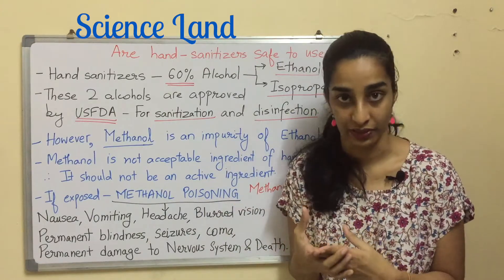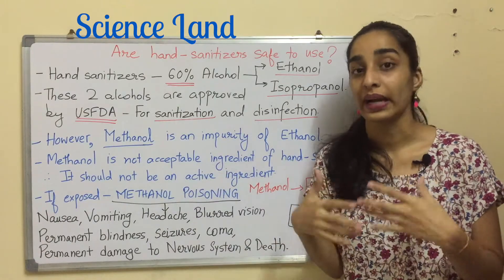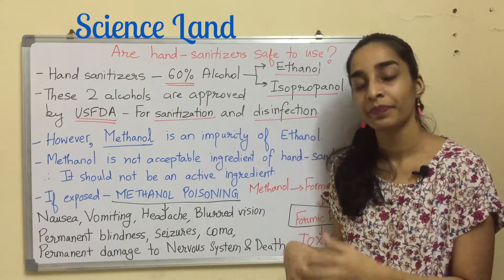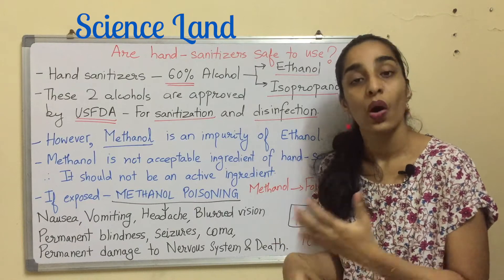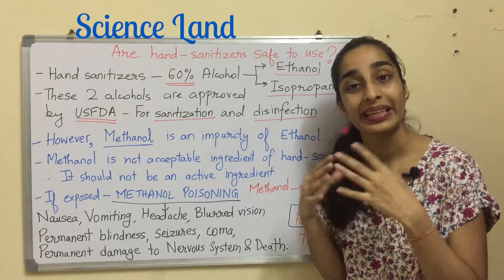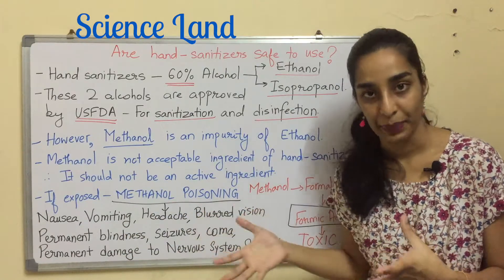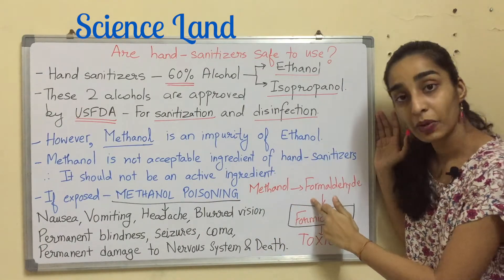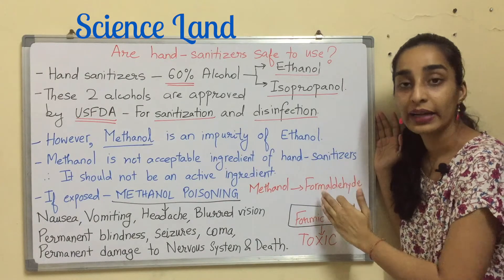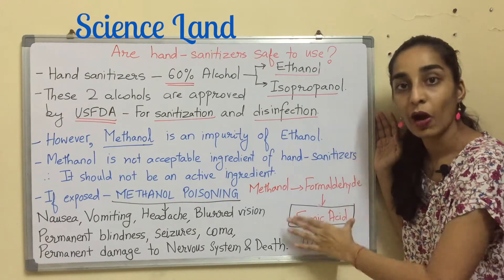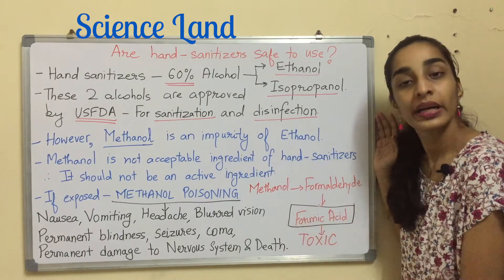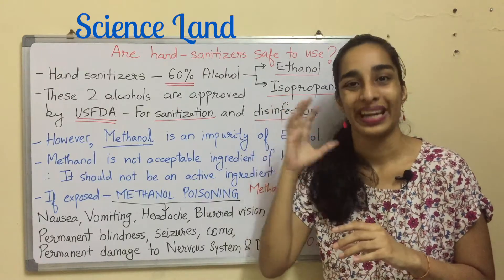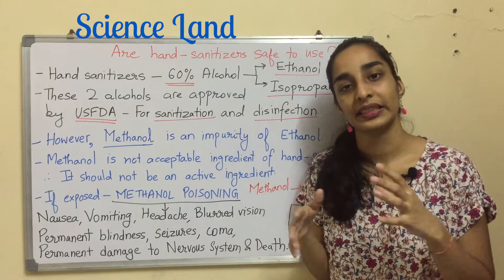Methanol is forbidden in hand sanitizers because it is very toxic. If methanol is consumed by oral consumption, absorbed through the skin, or inhaled, it may lead to methanol poisoning. The body metabolizes methanol into formaldehyde, which is then metabolized into formic acid. Accumulation of formic acid in the liver is very toxic and can damage the brain and the optic nerve.